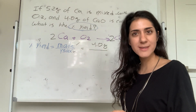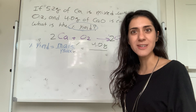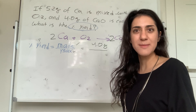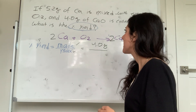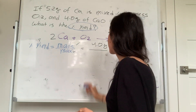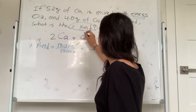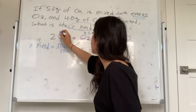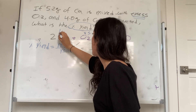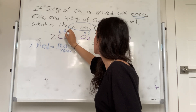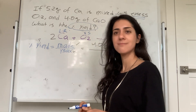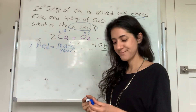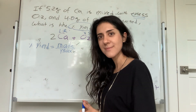My limiting reagent is calcium. Based on calcium, the max calcium oxide I can make is 7.3 grams.